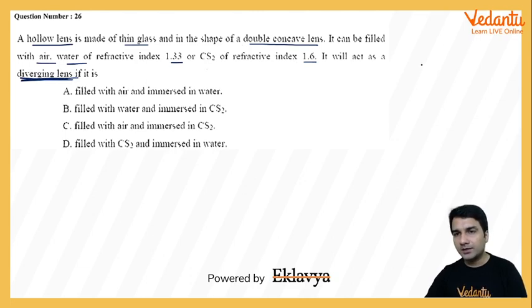So basically, what is it? We have a thin glass with a concave lens present, and I want to make a diverging lens.